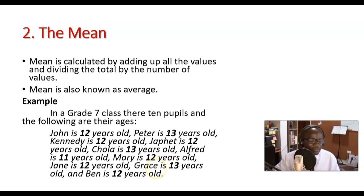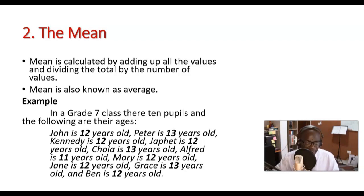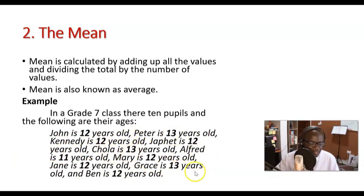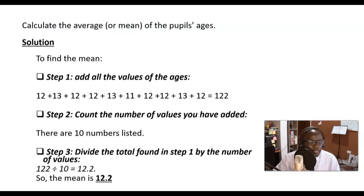Out of this list certain numbers keep appearing — some are more frequent, others less frequent. To find the mean we want to find the average. Altogether we have 10 numbers in this list. To calculate the mean, follow these three steps. Step one: add all the values of the ages.